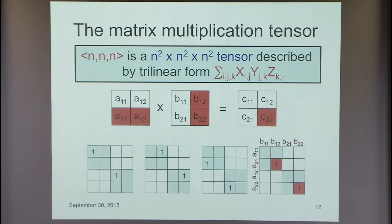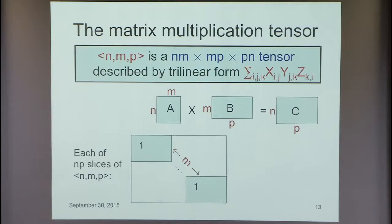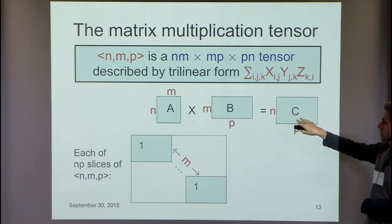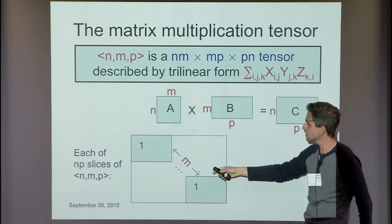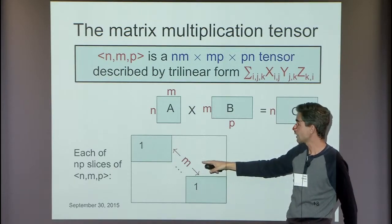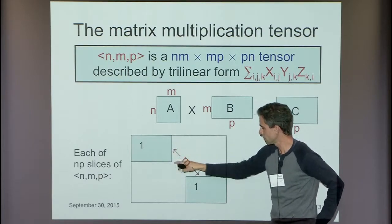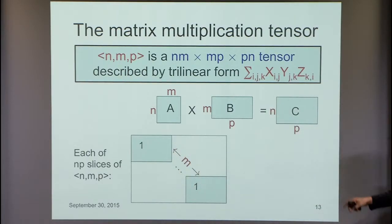In general, ⟨n,m,p⟩ means the tensor for multiplying an n×m matrix by an m×p matrix. Its slices, of which there are n times p, each have m rectangles organized diagonally. So we're trying to find the rank of this family of tensors—we'd like to show it's close to n². That's much harder than finding the rank of a matrix.